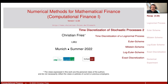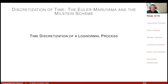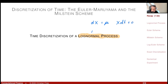In this small session, I'd like to apply our time discretization schemes for stochastic processes to a very prominent and important example: the log-normal process. By log-normal process, I mean that dx = μx dt + σx dw. The Black-Scholes model is an example of this.